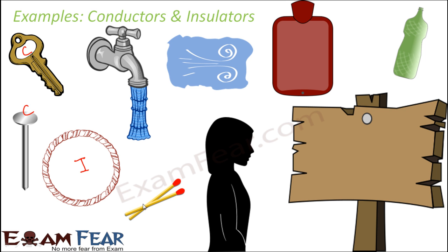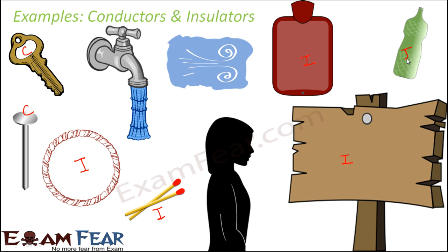A wooden plank like teak is made up of wood, and wood is an insulator, so it is also an insulator of electricity. Rubber and anything made up of rubber is also an insulator. Plastics — a huge number of substances are made up of plastics and they are all insulators.